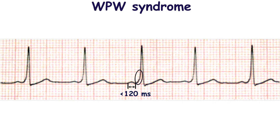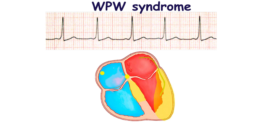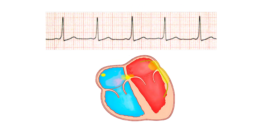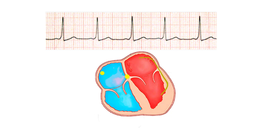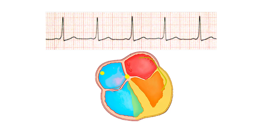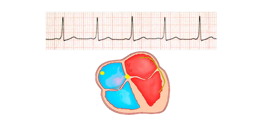There is also a delta wave, which is a slurred upstroke in the QRS complex. The ventricles are activated by impulses conducted by both the accessory pathway and via the atrioventricular node. The QRS complex consists of a fusion between early ventricular activation via the accessory pathway and late ventricular activation via the AV node, leading to slurring of the QRS upstroke — the delta wave. The QRS complex becomes somewhat prolonged.